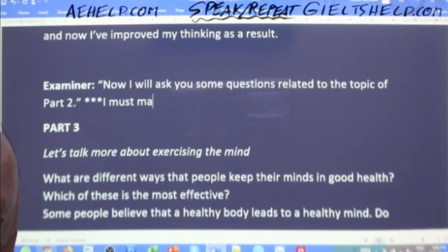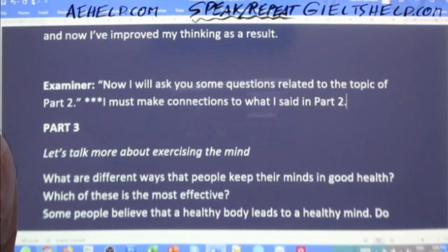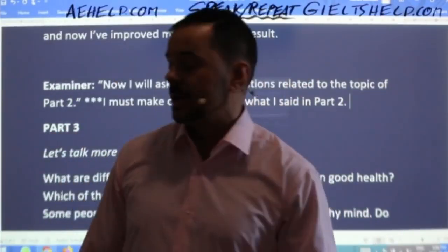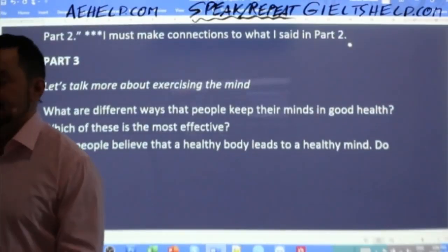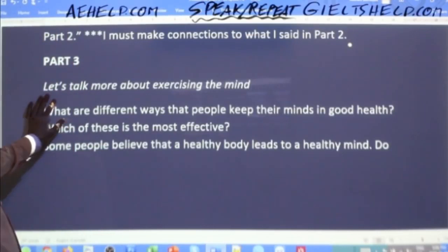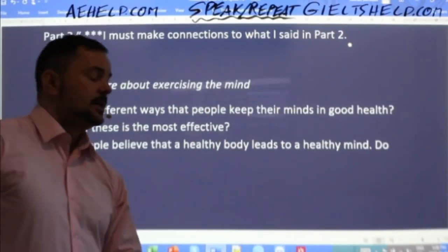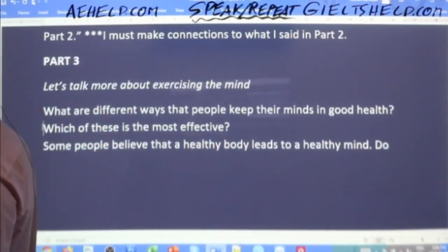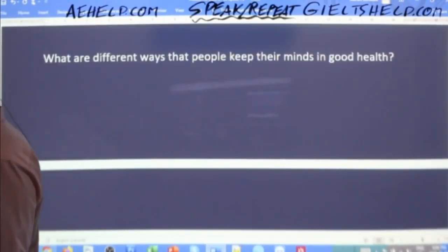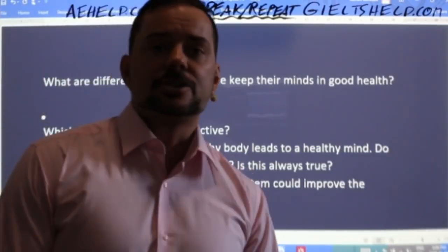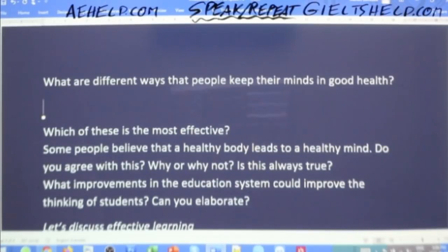We talked about chess, playing chess, using it as a brain exercise to think better, think faster, more analytically — so use this information in part three. Speak in full sentences. Let's talk more about exercising the mind. The examiner asks you: 'What are different ways that people keep their minds in good health?' Give a nice full sentence answer and make connections to part two. In part two we talked about chess as the exercise to enhance our thinking, and now the examiner asks about different ways people keep their minds in good health.